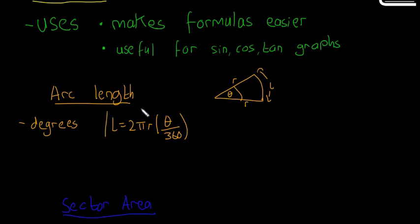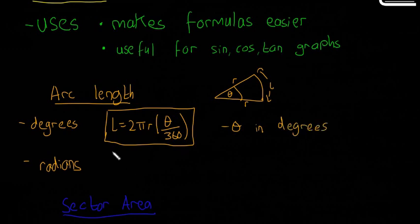It's not the worst formula, but not super easy either. 2π is the constant, r is the radius, and θ depends on the angle size. Now in radians, if θ is in degrees you use that formula, but if θ is in radians you can use this nice handy formula: L = rθ. You can see that's definitely easier for the arc length formula.